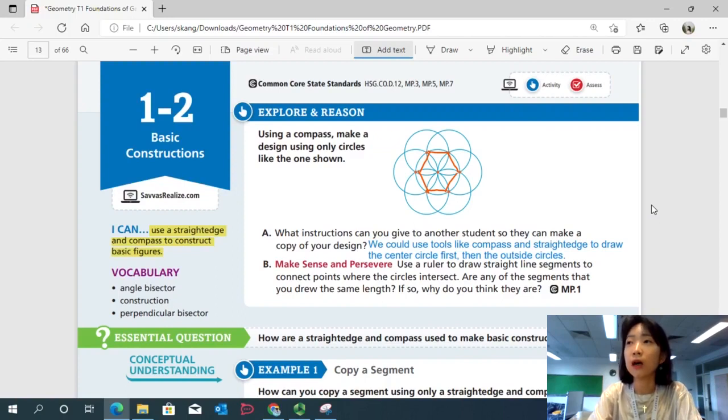Part B. Use a ruler to draw straight line segments to connect points where the circles intersect. Are any of the segments that you drew the same length? If so, why do you think they are? So if you look at the design, you will draw lines connecting all these vertices on the center circle. And if you measure them with a ruler, would you find that they're all the same length? Yeah, it's a regular polygon.